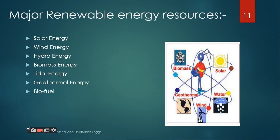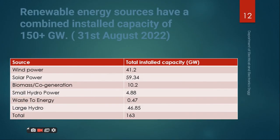Under major renewable energy resources, I covered the main renewable sources in our country: solar energy, wind energy, hydro energy, biomass energy, tidal energy, geothermal energy, and biofuel. I also included the current capacity of electricity generation in India in gigawatts, with data as of 31st December 2022, taken from a government organization's portal.